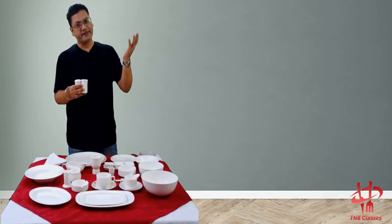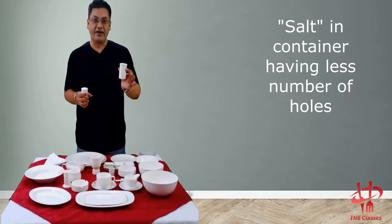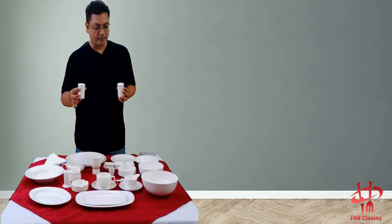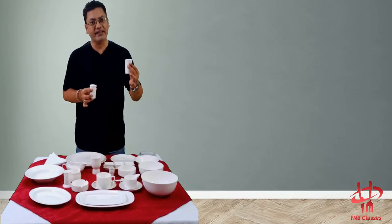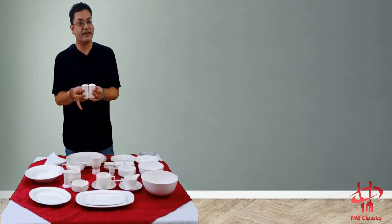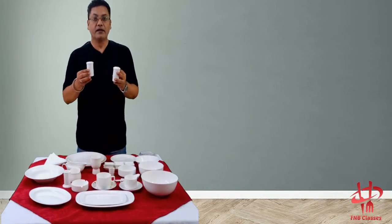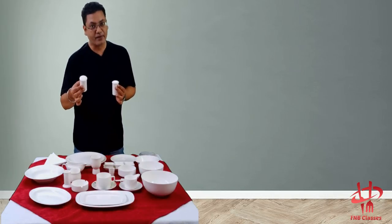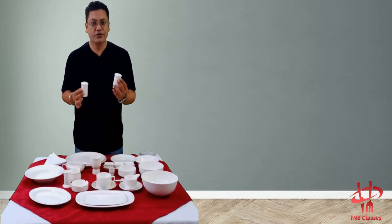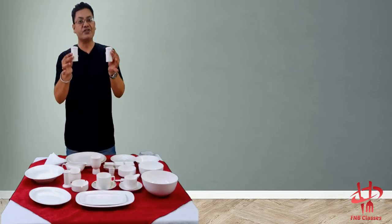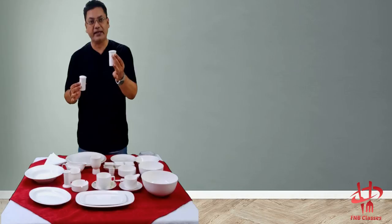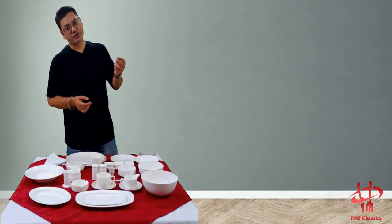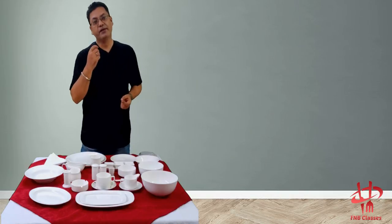In most parts including the USA, salt is in the container with fewer holes and pepper in the container with more holes — because a little extra pepper is adjustable, but excess salt can ruin the taste of a dish. In certain European countries it is vice versa: pepper in fewer holes and salt in more holes, as they are not habitual of having a lot of pepper. In our country, most places follow the American way.